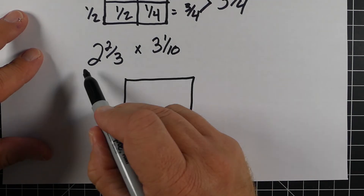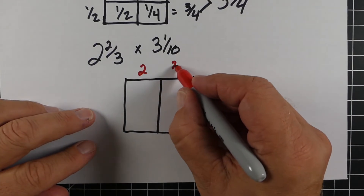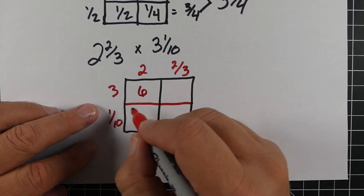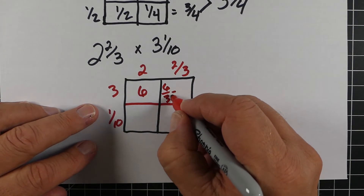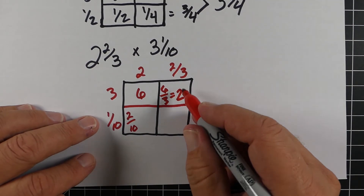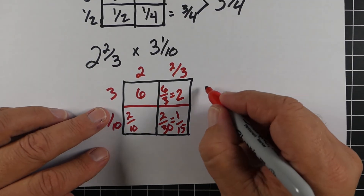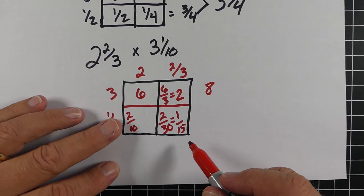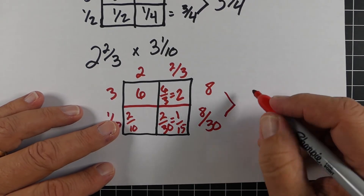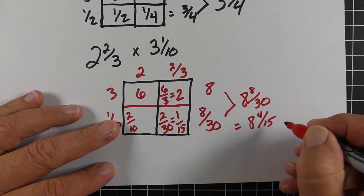Here's another one using two and two-thirds and three and one-tenth. This is another way of doing it — I don't personally like doing it this way, but it is effective. You take three times two-thirds to get six-thirds or two; one-tenth times two is two-tenths or one-fifth; and one-tenth times two-thirds is two-thirtieths or one-fifteenth. When we add these up, the top two give us eight, and the bottom ones give us eight-thirtieths, so eight and eight-thirtieths, simplified to eight and four-fifteenths.